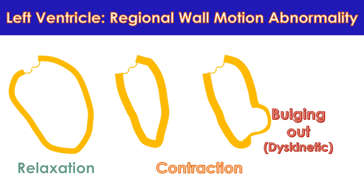Another important aspect is the contraction of each region of the left ventricle. If all regions contract normally, it is reported as no regional wall motion abnormality. If a particular region contracts poorly, it is reported as hypokinetic. A region which is not contracting at all is reported as akinetic. A region that bulges out when all other regions are contracting is called dyskinetic. Regional wall motion abnormalities are common after a myocardial infarction, when a blood vessel supplying a region is blocked. In conditions like dilated cardiomyopathy, the whole left ventricle may be hypokinetic — called global hypokinesia.